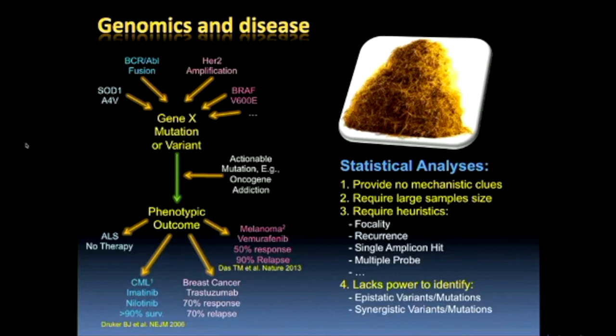Things get even worse. In the case of the V600E mutation in BRAF — the BRAF oncogene in melanoma — a very potent, high-affinity inhibitor called vemurafenib has tremendous response in patients, but unfortunately this response is not very lasting. Typically somewhere between three and five months, virtually all patients treated with vemurafenib will relapse with a BRAF-independent version of the tumor that no longer responds to the inhibitor.